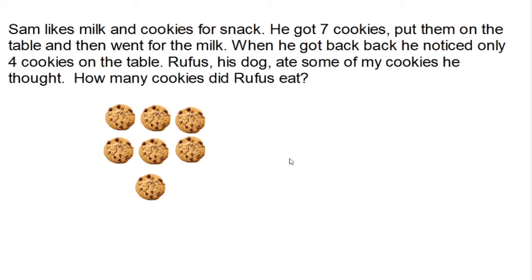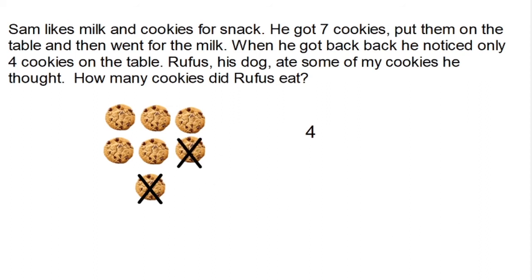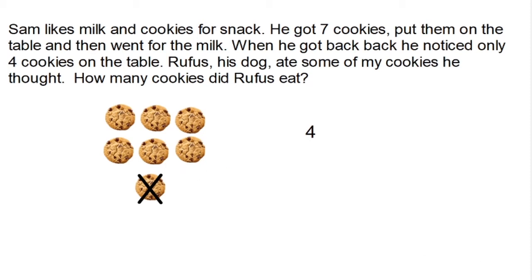I'm going to guess that Rufus ate four of Sam's cookies. Now after that guess, I need to check. I'm going to put an X on four cookies because four is my guess, and I'm going to see how many are left. I count one, two, three. Well, three is less than four. Rufus did not eat four cookies — he ate less than four cookies, because if he ate four, I'd only have three left. And I have four left.